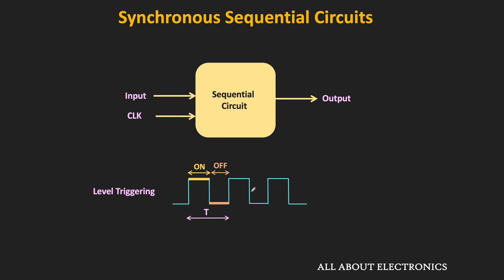In level-triggered circuits, the circuit is sensitive to the clock level. It responds to the input when the clock level is high, and during that on time, even if the input changes multiple times, the circuit responds to each change. After the on time ends, the circuit will not respond to input changes until the clock level becomes high again. That is the basic difference between level-triggered and edge-triggered sequential circuits.